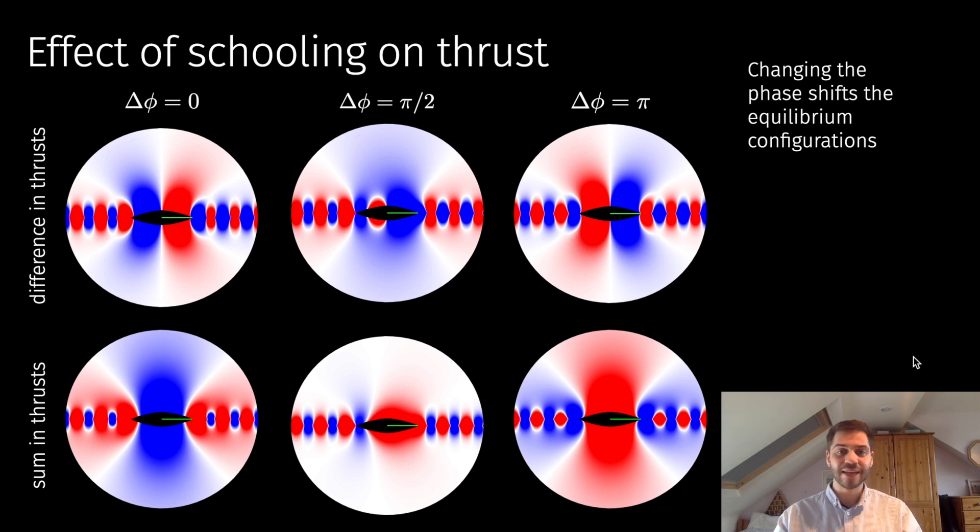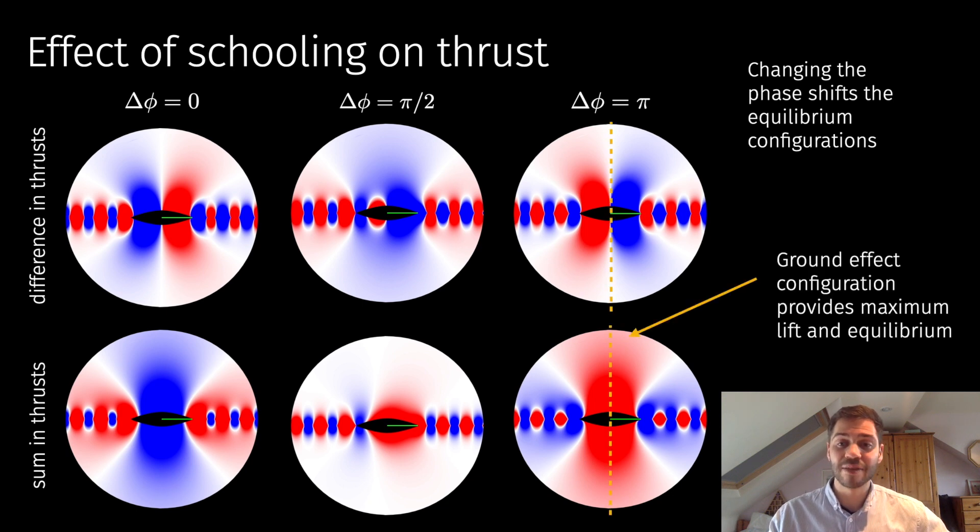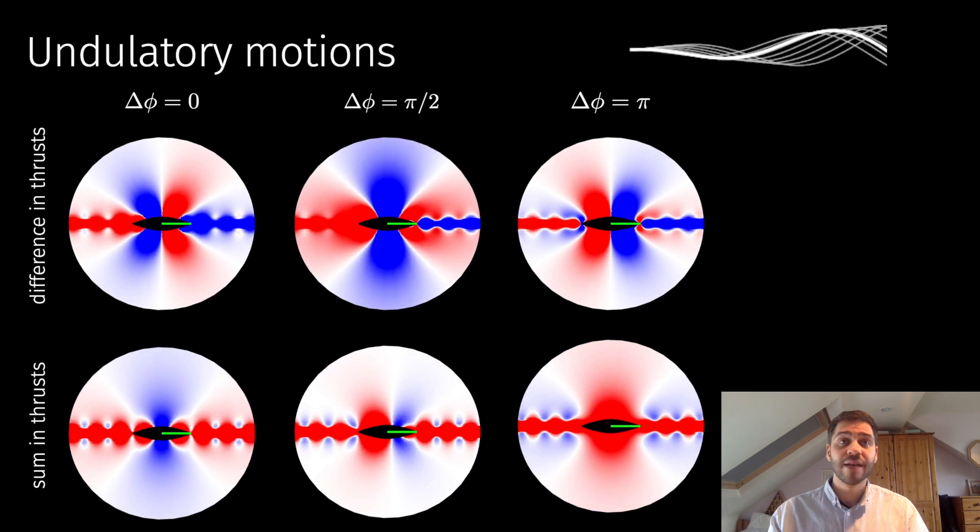You can see that there's still this main dipole structure and the wake structure, and they're kind of being shifted or merged by changing the phase. Then we can also look at the ground effect configuration when these wings are in anti-phase—these will be in equilibrium, and also you see a large increase in thrust there.